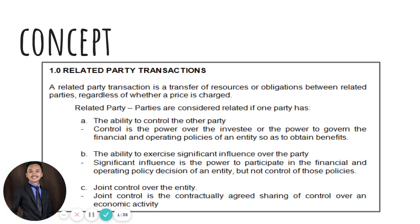Parties are considered related if one party has the ability to control the other party. When we talk about control, it is the power of the entity to obtain benefits. If a particular corporation or entity has the power to control a particular subsidiary or investee, then that party is considered as a related party, and every transaction between those parties is required to be disclosed.